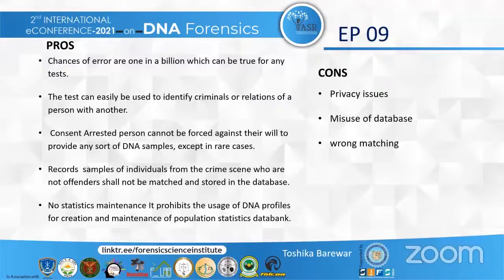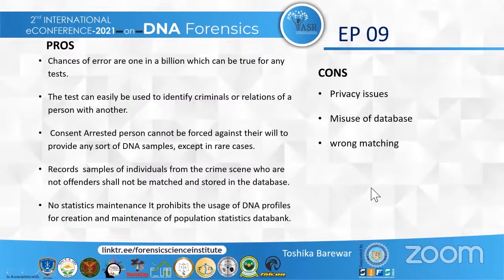The DNA test can be easily used to identify criminals and also establish a relationship between persons. The arrested person cannot be forced against their will to provide a DNA sample, but there are some exceptions. Data will be accepted from the investigator and matched with the data available in the data bank. DNA patterns will be kept in the DNA bank and used whenever required for the purpose of national interest, police interest and forensic interest, kept under a government regulatory body, so there is very little chance of misuse.